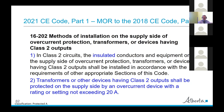In Section 16, the word 'insulated' was added for conductors. Also, in sub-rule two, it now says transformers or other devices having Class 2 outputs shall be protected on the supply side by an overcurrent device with a rating or setting not exceeding 20 amps — again reflecting the introduction of 20-amp branch circuits.